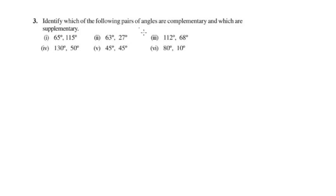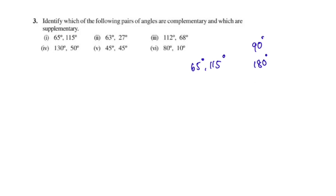Question 3: Identify which of the following pairs of angles are complementary and which are supplementary. If two angles add up to 90 degrees, they are complementary. If two angles add up to 180 degrees, they are supplementary.